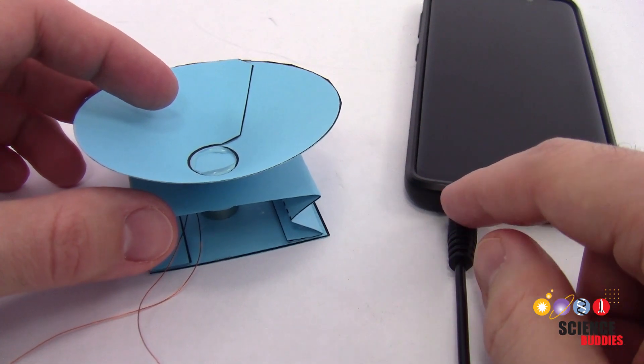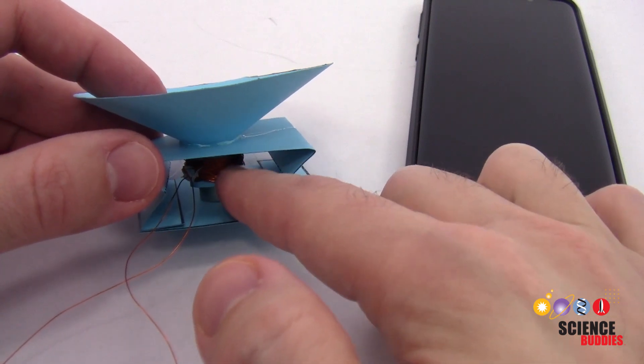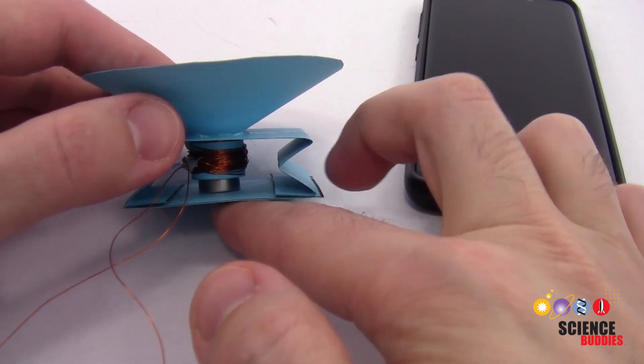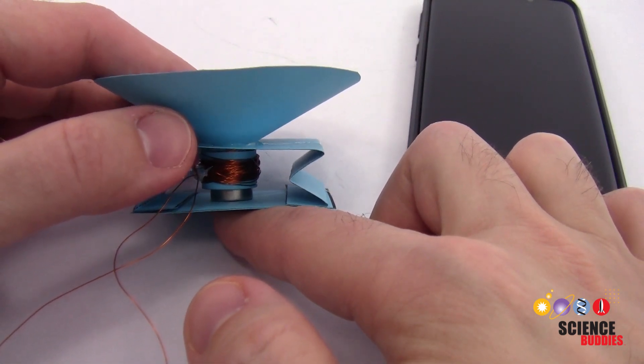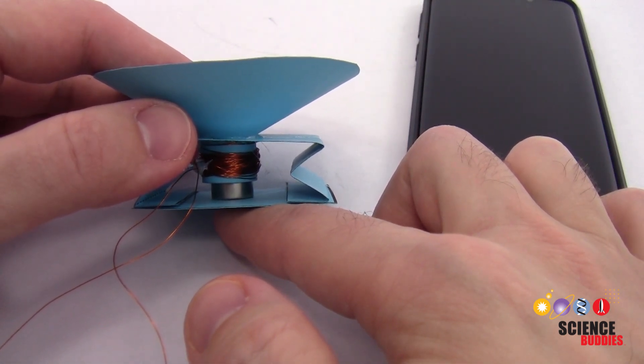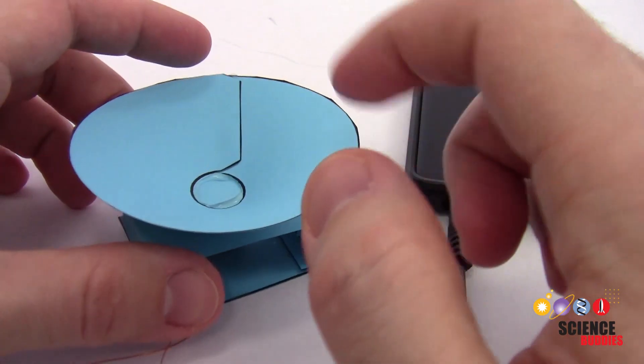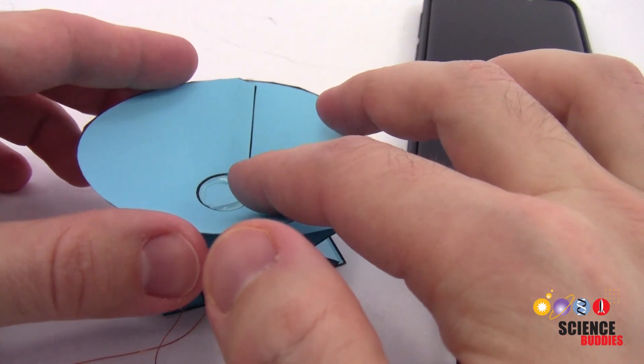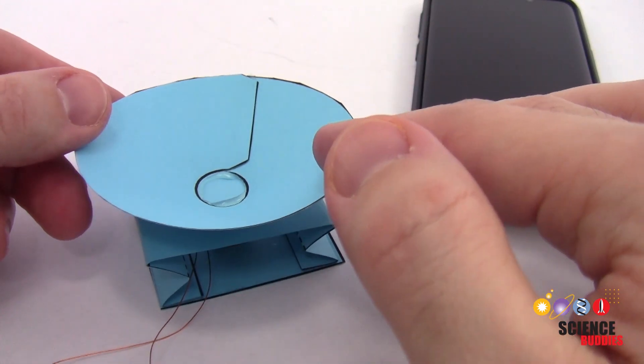Now when the device plays music, it sends electrical current through this wire which goes through the coil and generates a magnetic field. The magnetic field from that coil pushes and pulls on the magnetic field of the permanent magnet, and that causes the body of the speaker to vibrate up and down. This cone then vibrates and pushes on the air, which generates a sound wave that travels to your ears so you can hear the music.